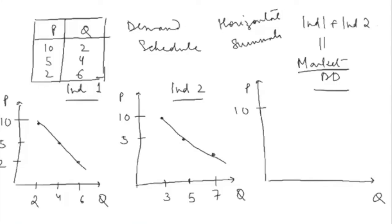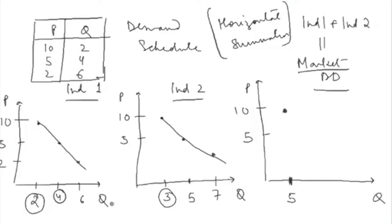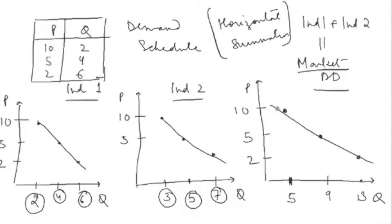In horizontal summation, you keep the price constant and add the quantity demanded at that price. At price 10, individual 1 demands 2 and individual 2 demands 3, giving a total market demand of 5. At price 5, individual 1 demands 4 and individual 2 demands 5, giving a market demand of 9. At price 2, individual 1 demands 6 and individual 2 demands 7, giving a market demand of 13. Joining these three points gives the market demand curve.